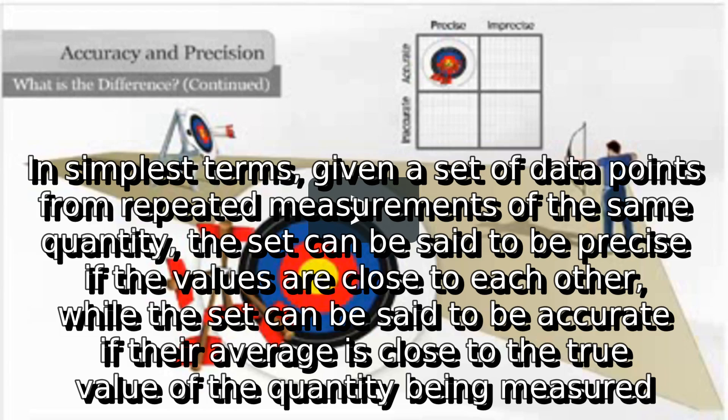In simplest terms, given a set of data points from repeated measurements of the same quantity, the set can be said to be precise if the values are close to each other, while the set can be said to be accurate if their average is close to the true value of the quantity being measured.